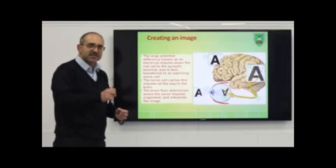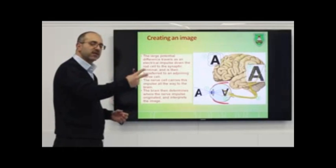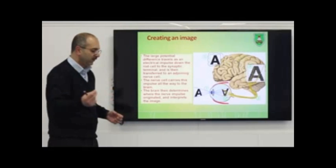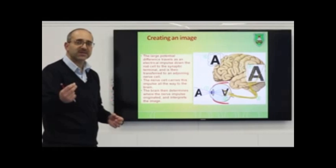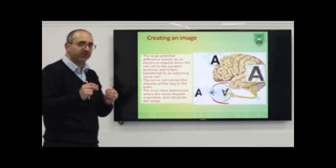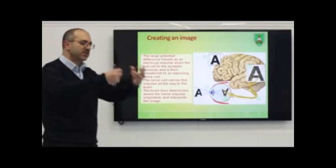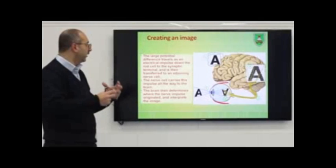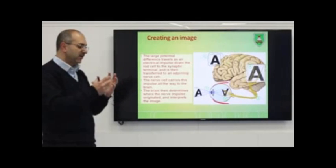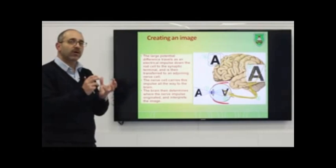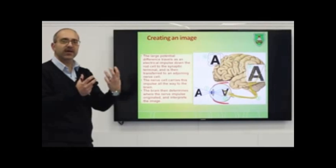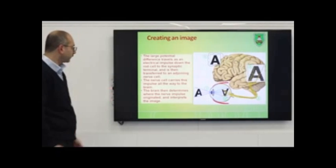This is the signal — transmitted from the rod cells in the retina, through connected neurons, to the brain. Depending on where the signal comes from, the brain forms the image in the proper way.